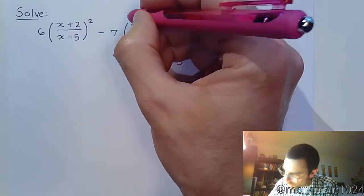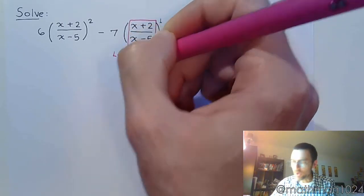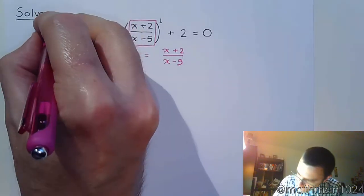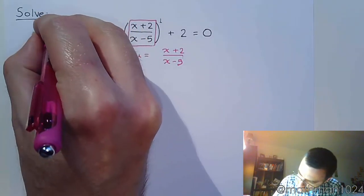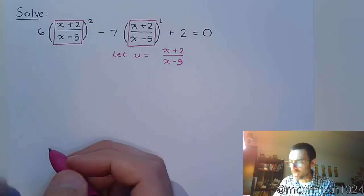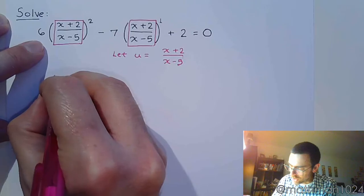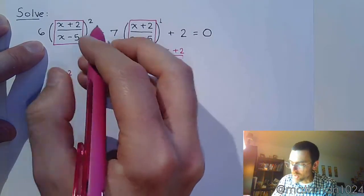And if we do that, we are now going to take this guy right here, and we're going to replace him with u. And we're going to do the same replacement with that guy. He gets replaced with u. So this becomes 6, instead of fraction, we're going to write u squared, because there's the power.